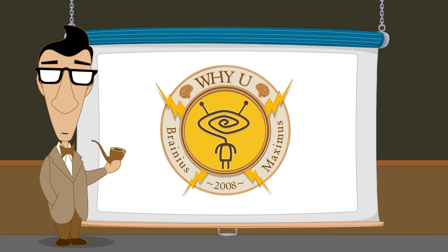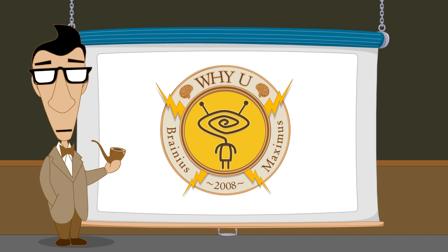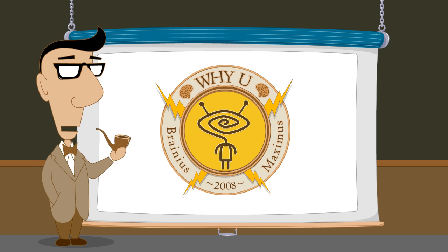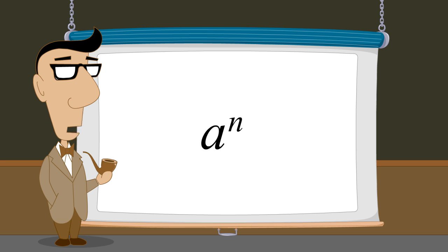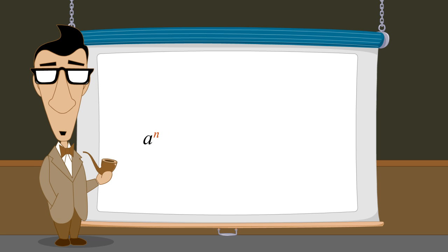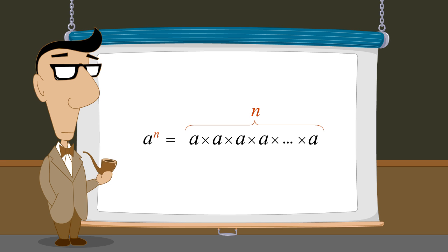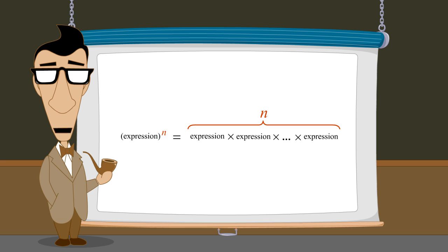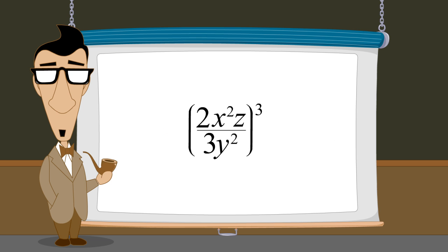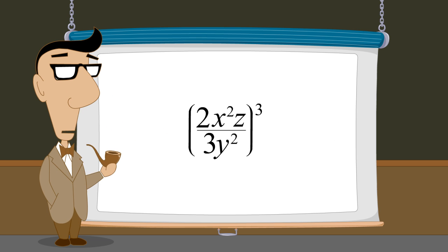Hello, I'm Professor Von Schmohawk, and welcome to Why U. So far, we have seen that raising any number to the nth power, where n is a positive integer, is equivalent to n copies of that number multiplied together. And that this is true not only for numbers and variables, but also for expressions. In this lecture, we will see what happens when the expression raised to a power contains more than one term.